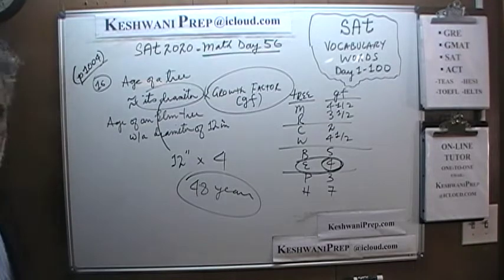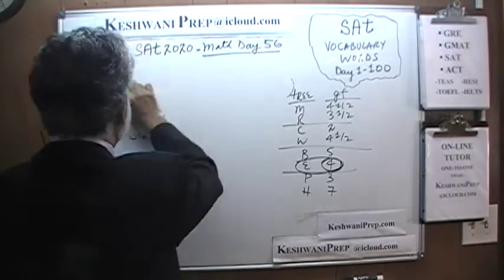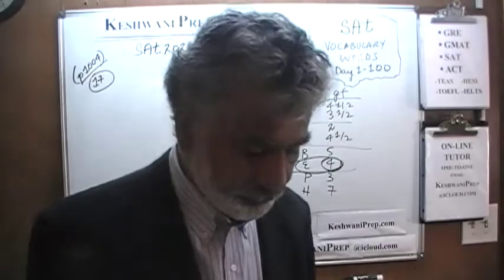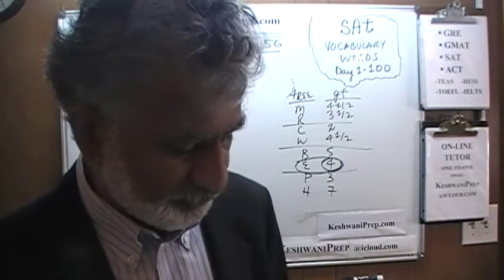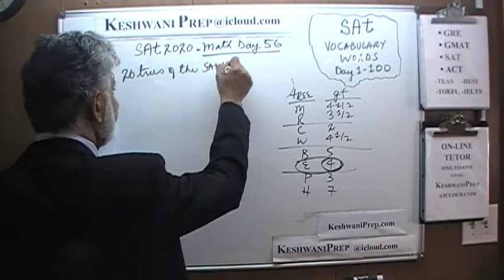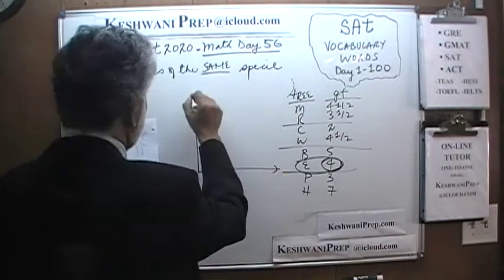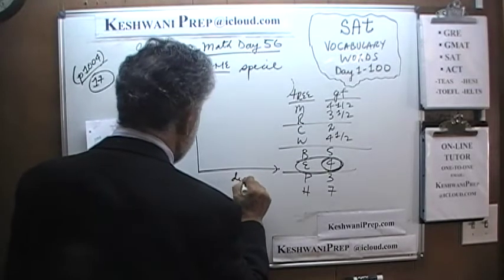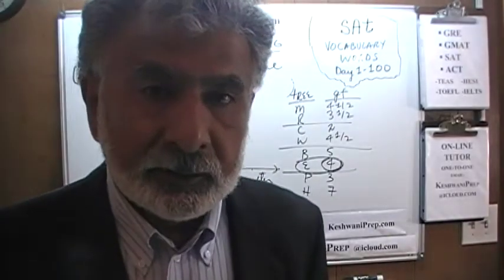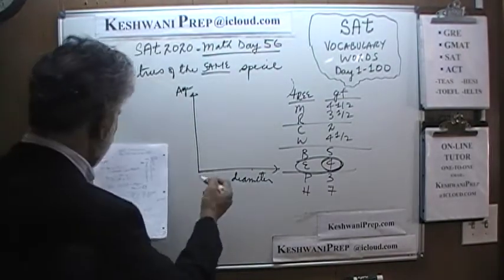Let's take a look at number 17. We are going to use the same table for 16, 17, and 18 — it is a triplet. In number 17, what we are dealing with are 26 trees of the same species. We are given a chart where the x-axis has the diameter and the y-axis has the age. They took the measurements of diameter and age and plotted them.